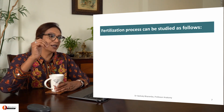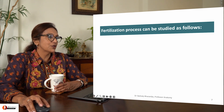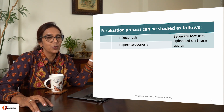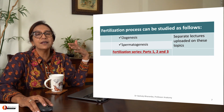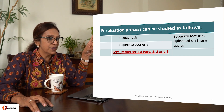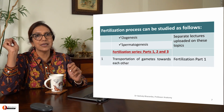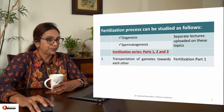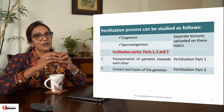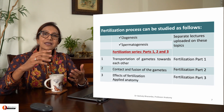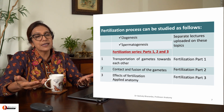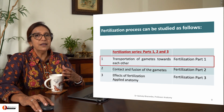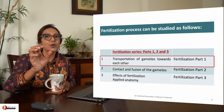All these are factors affecting fertilization, and therefore the fertilization process is studied as oogenesis and spermatogenesis — covered in separate uploaded lectures — and fertilization itself is divided into three lectures. Part 1 covers transport of gametes from the male testes and from the ovary to the ampulla of the fallopian tube. Part 2 is when they meet and fuse. Part 3 covers the effects of fertilization and related applied anatomy.